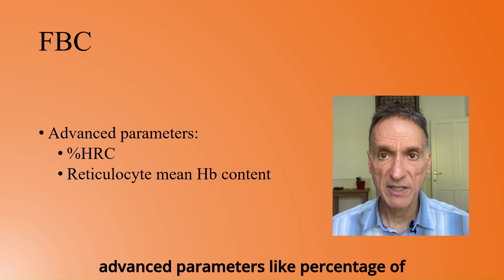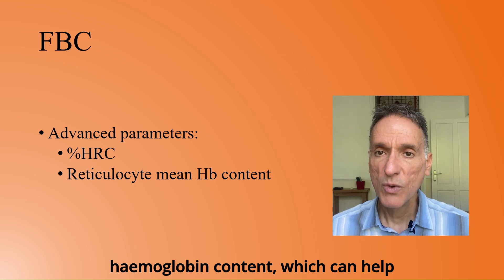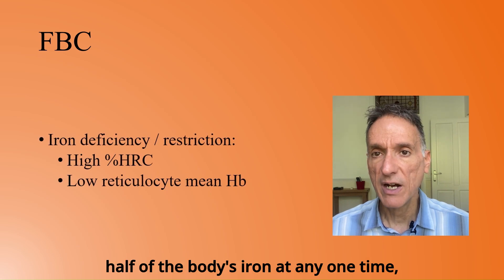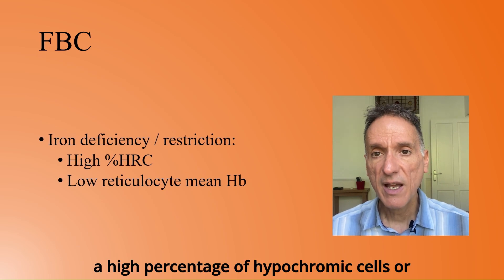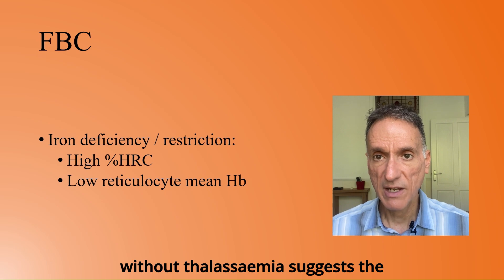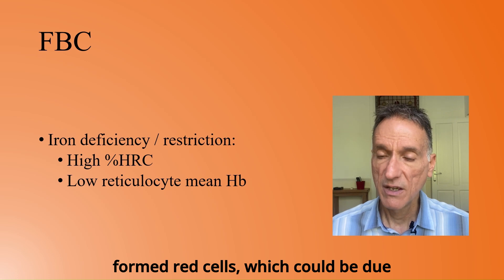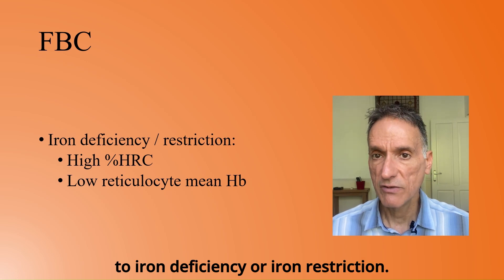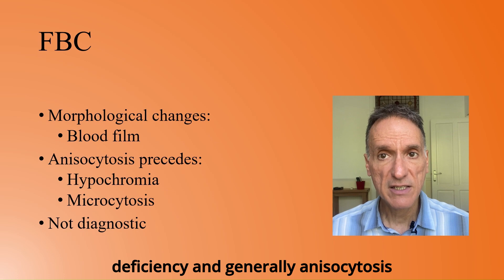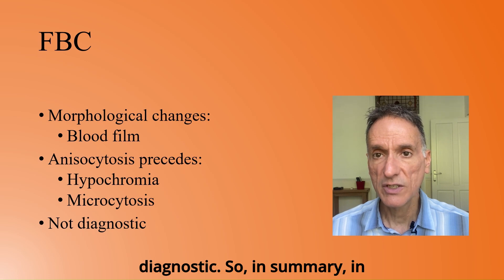There are more advanced parameters like percentage of hypochromic cells and reticulocyte mean haemoglobin content, which can help evaluate iron deficiency further. A high percentage of hypochromic cells or low reticulocyte Hb content, without thalassaemia, suggests that iron is not adequately reaching newly formed red cells, which could be due to iron deficiency or iron restriction. Morphological changes also appear in iron deficiency, and generally anisocytosis precedes hypochromia and microcytosis, but blood cell morphology is not diagnostic.